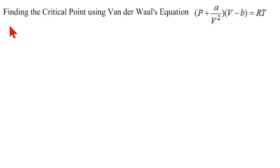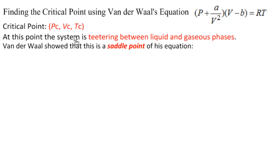In this video, we're going to find the critical point using Van der Waal's equation. Recall that the critical point is PC, VC, TC — critical pressure, critical volume, critical temperature — and at this point, the system is teetering between liquid and gaseous phases.